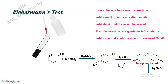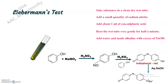We can get bluish-green fluorescence, due to the formation of the endophenol anion which has a blue color in alkaline medium. This test indicates the presence of phenol.